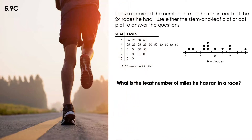First scenario: what is the least number of miles he has run in a race? As you can see here, the key is telling me on the stem-and-leaf that everything that goes under the stems — these are units, like 6 — and if we continue reading the key, 25 is under the leaves, and these are my decimals.